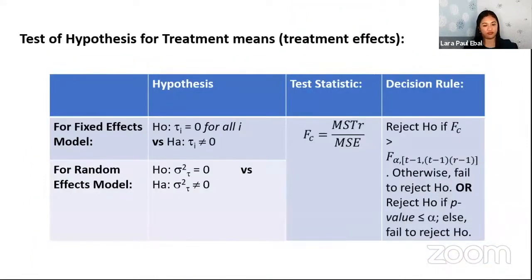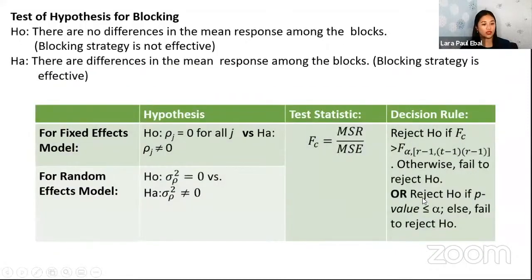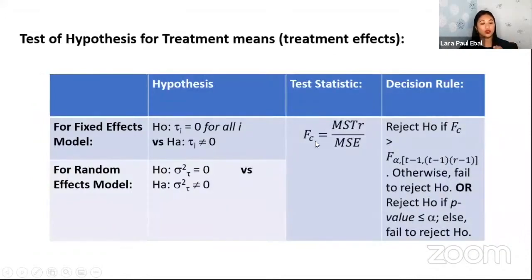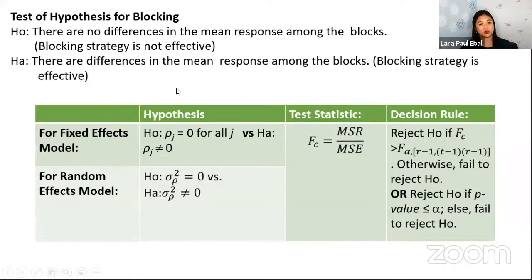So the test now is the F. Take note na aside from the mu's that we usually use, we can have this fixed effects H0 for fixed effects and then H0 for the random effects. So ganun lang din, tau and then sigma squared lang, yung notations natin. And then the F, again, we go back to F, we have this ratio, and then decide using F or using the p-value. Take note also here, we are dealing with the comparison among the treatments in terms of means. And then here, we are dealing with the comparison among blocks. So we compare blocks. We have to test. H0: blocking strategy is not effective. HA: blocking strategy is effective. Pag not effective, no differences in the means among the blocks.